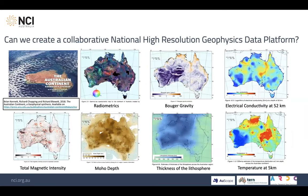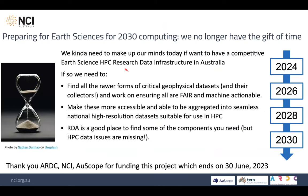Australia is well endowed with geophysical data, but the problem is it's all derived data products that are available. The conclusion of our project is we need to make up our minds today if we want a competitive Earth Science HPC infrastructure: we need to start now to find these raw forms of critical data sets and their collectors, ensure they are FAIR and machine-actionable, and make these accessible to build natural seamless high-resolution data sets, which is in the National Roadmap for Research Infrastructure. RDA is a good place to find some of the components you need, but HPC data issues are missing. Thank you to ARDC, NCI and AuScope for funding this project.